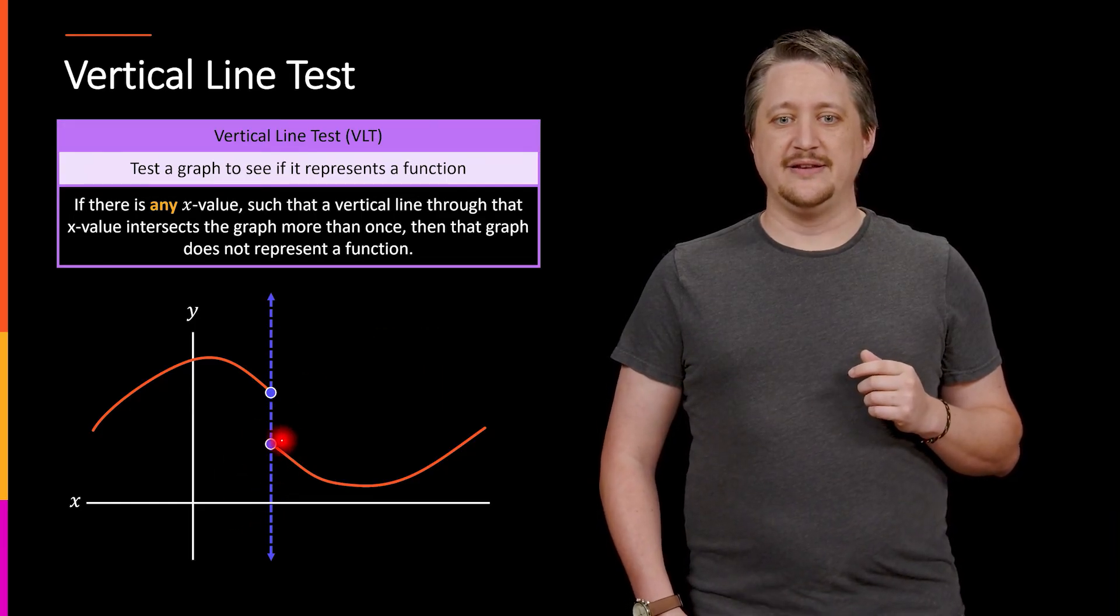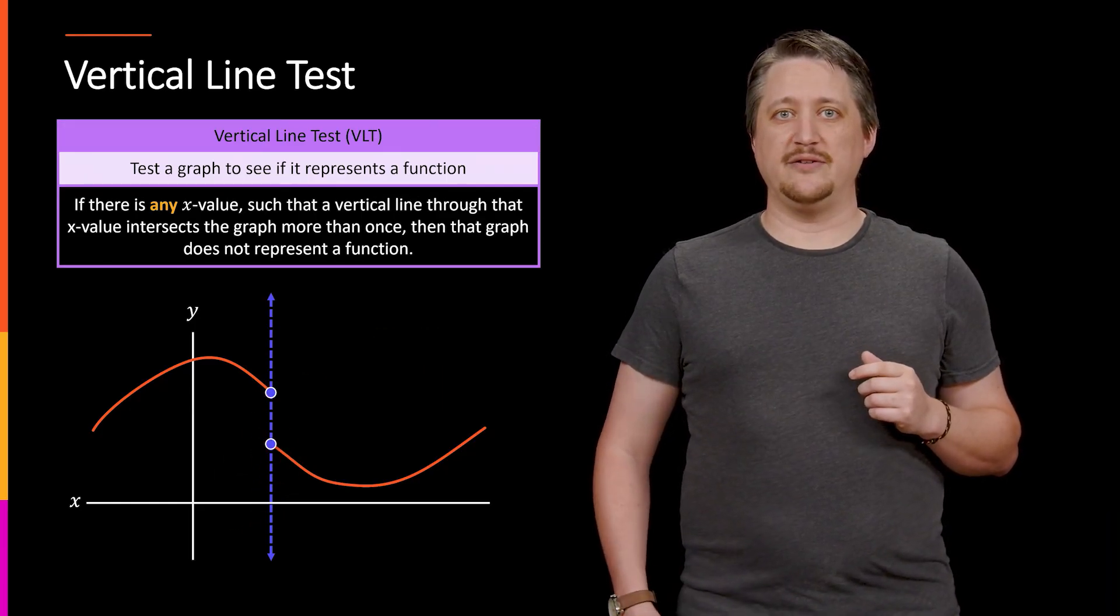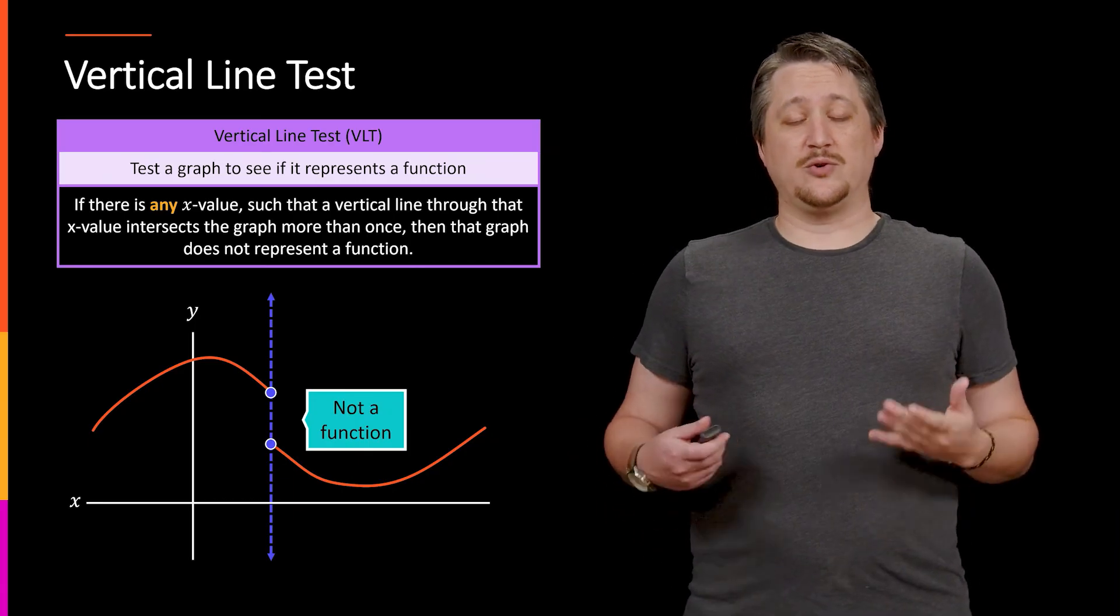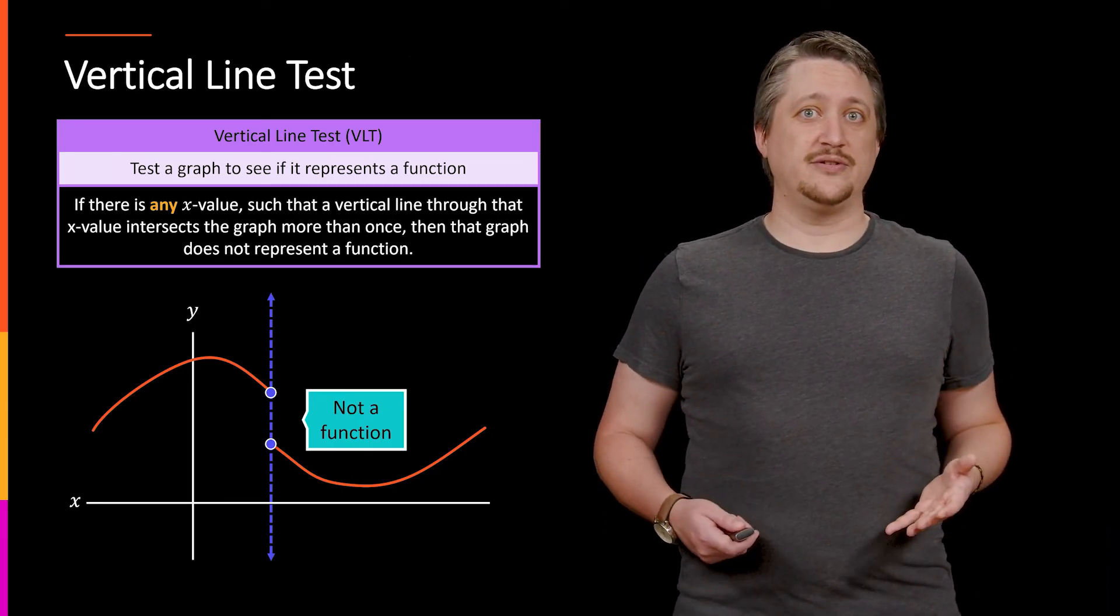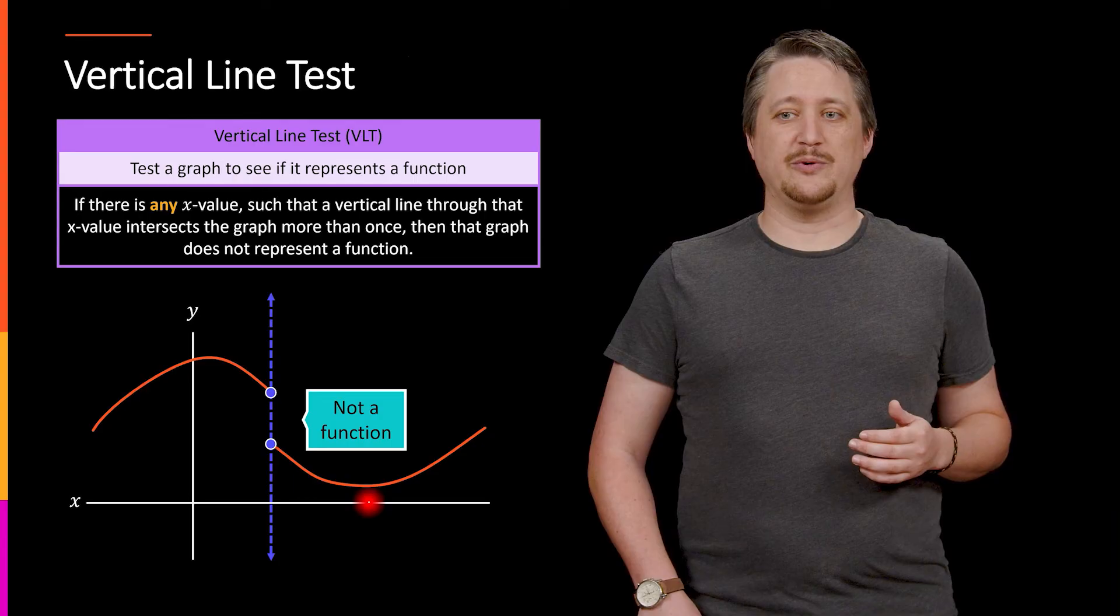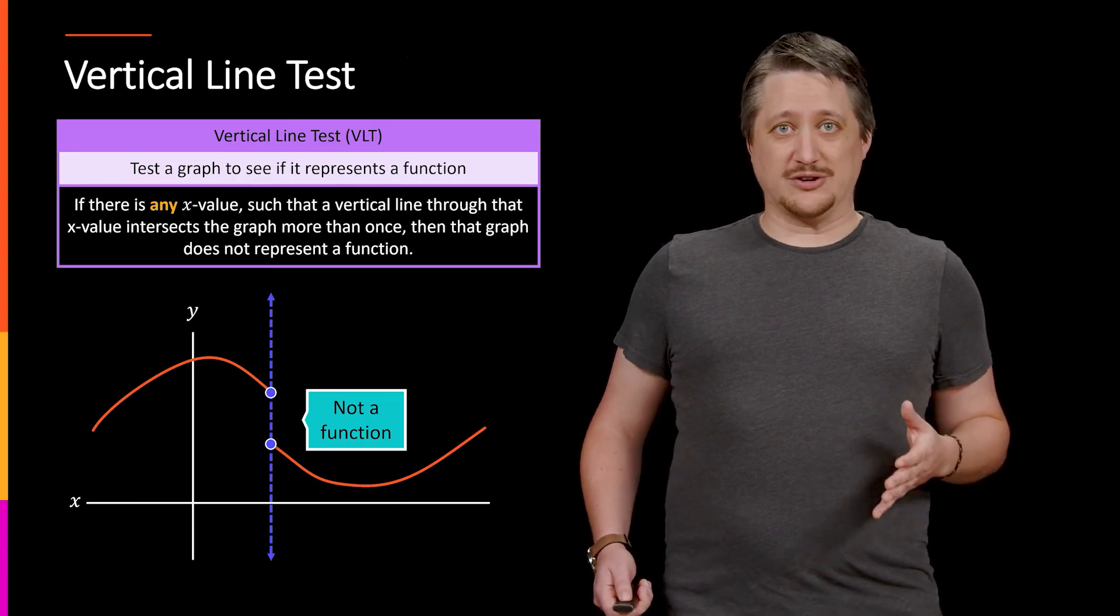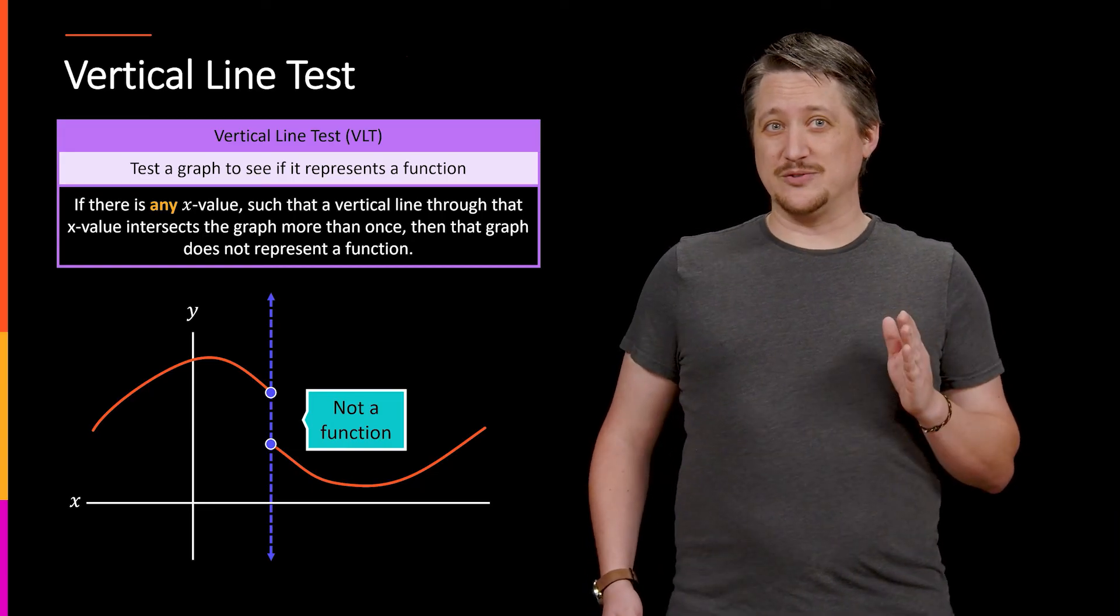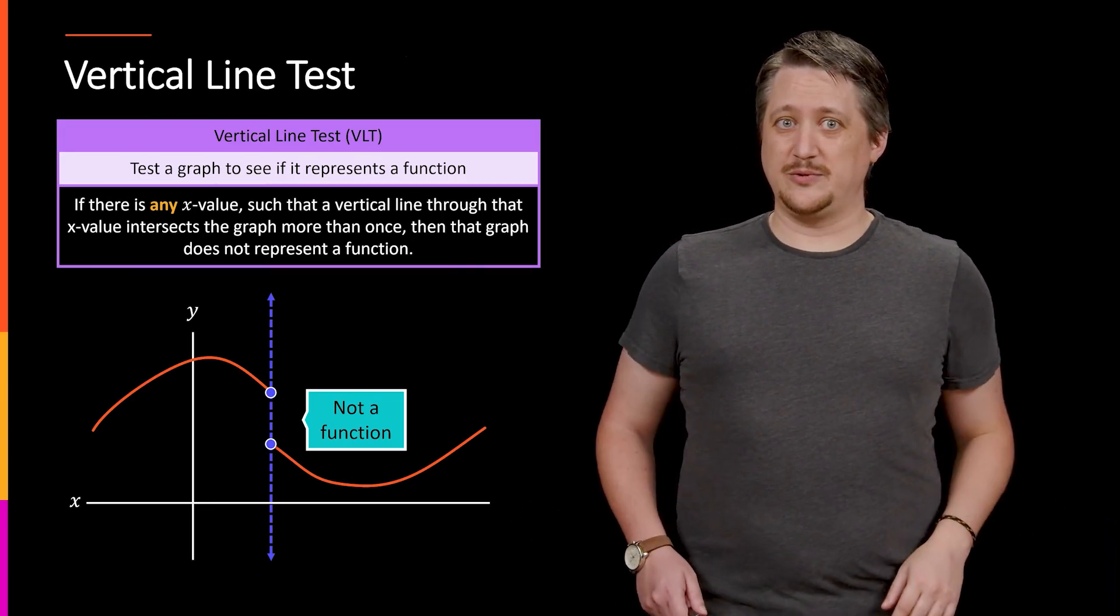This x value, whatever this x value is, has hit that y value and that y value. Because it did that, according to the vertical line test, that tells me this is not a function. So even though it works everywhere over here and everywhere over here, it doesn't work at that one spot. And because it doesn't work at one spot, it's not a function.